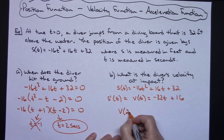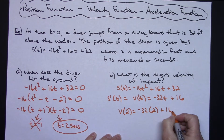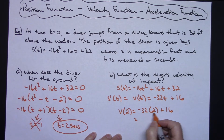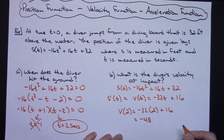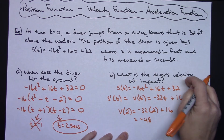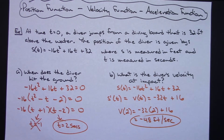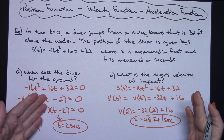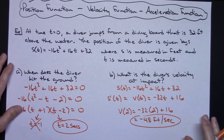So v of 2 is equal to negative 32 times 2 plus 16, which is negative 64 plus 16, giving negative 48. Everything is being measured in feet per second, so the velocity at impact is negative 48 feet per second. Just be careful with these questions — some may not involve any calculus whatsoever, and others involve that simple derivative.